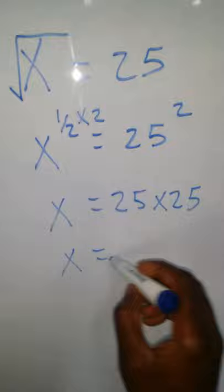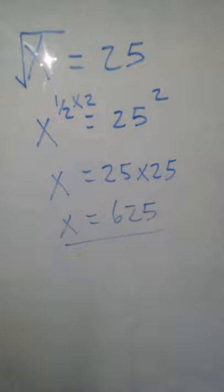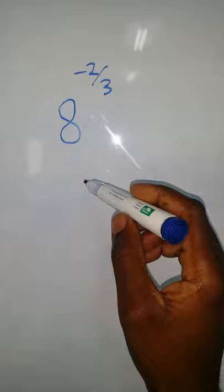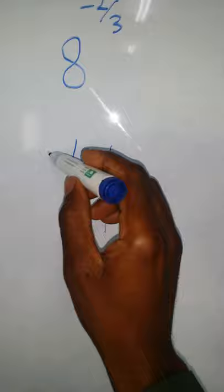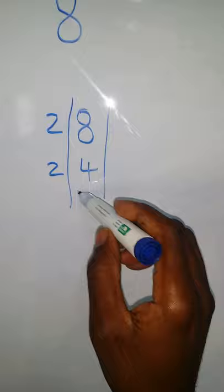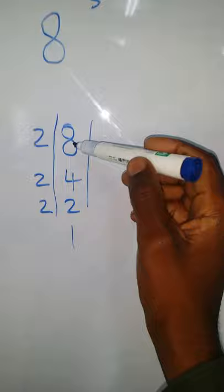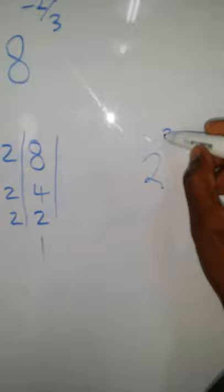So x is equal to 25 raised to the power three over two, which gives x equal to 625. Now if you have 8 to the power negative two-thirds, remember 8 can be rewritten — let's see how many twos go into 8: two, four, eight — meaning two to the power three equals eight.